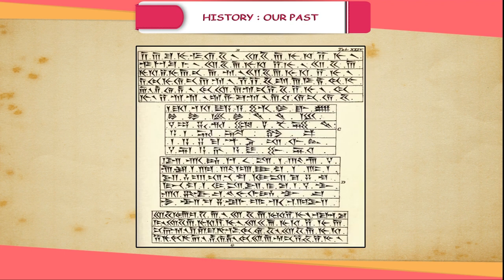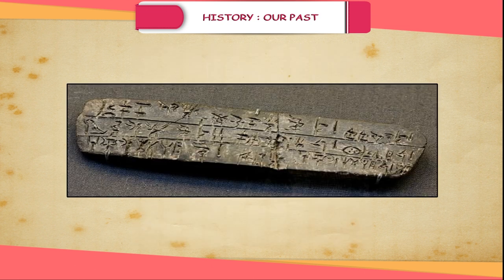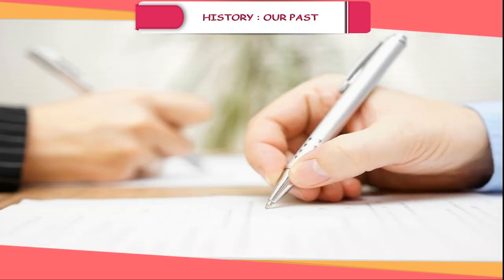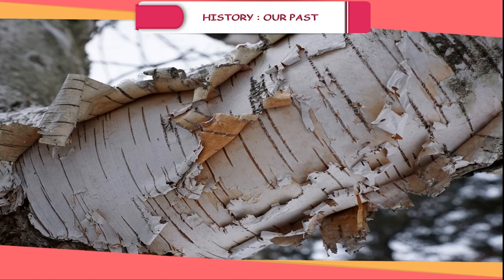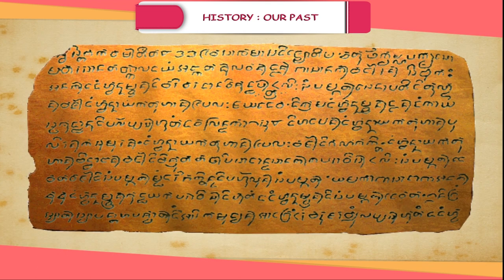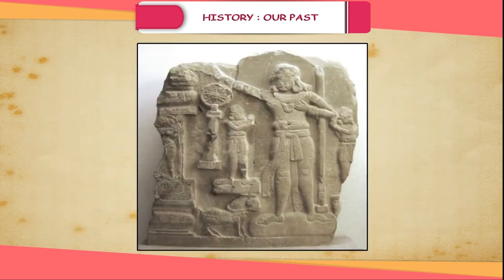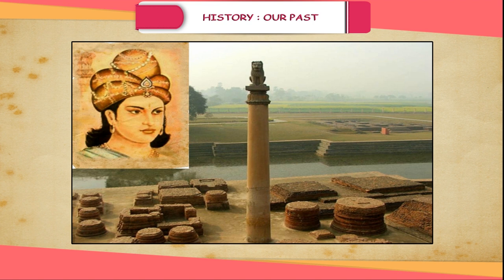With the dawn of civilization, language and script evolved. Now history is recorded or printed. But when printing was not known, it was written by hand on paper. Before the use of paper, records were written on dried palm leaves and birch tree barks. Copper plates as well as stone inscriptions were also used. Emperor Ashoka the Great engraved his ideas and beliefs on various matters,